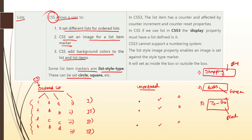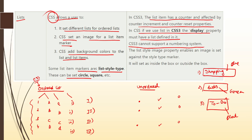In CSS3, the list item has a counter affected by the counter-increment and counter-reset properties. When using lists in CSS3, the display property must have a list value defined in it. Overall, CSS3 cannot support a numbering system — meaning CSS3 is not allowed to use an ordered list. This particular point is very important for an examination.